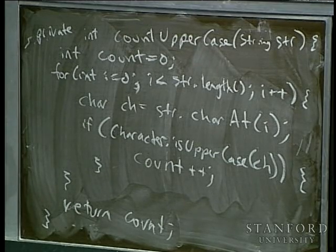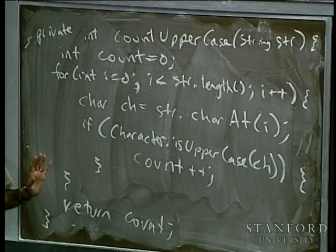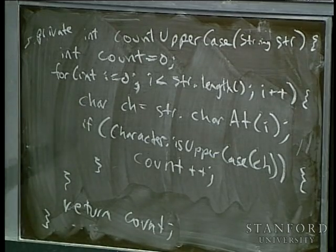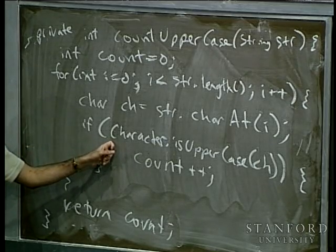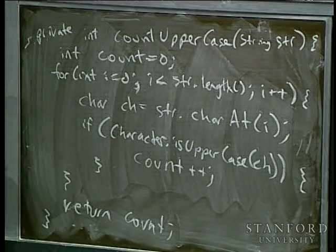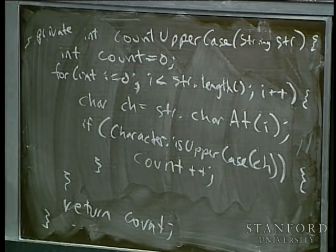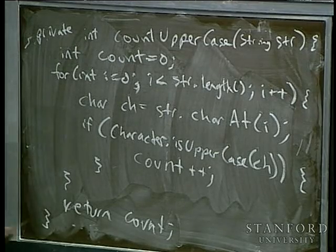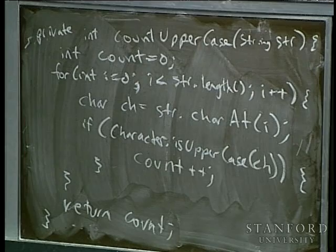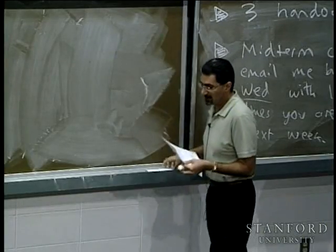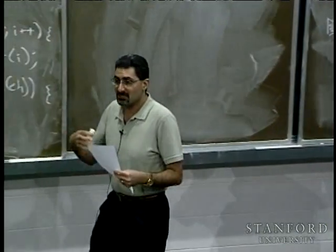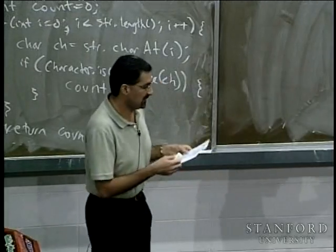This is an example of the sort of vanilla string processing you might do. You have some string, you go through all the characters of the string, and you do some kind of thing per character. In this case, we're not creating a new resulting string — we're just counting up some number of characters. Let's do something a bit more funky, which is to break a string up into smaller pieces.